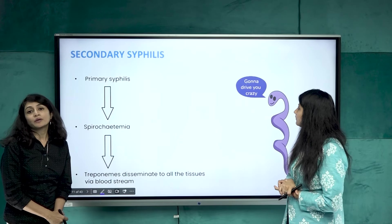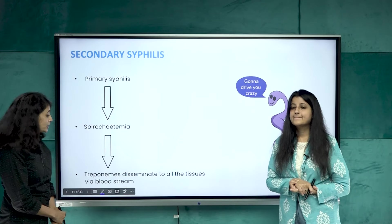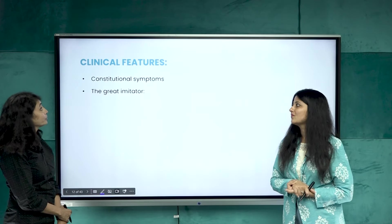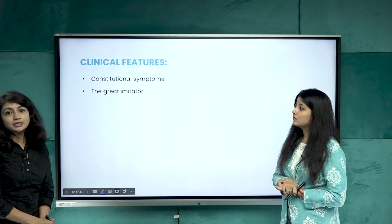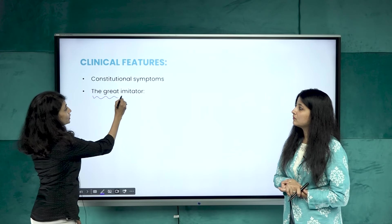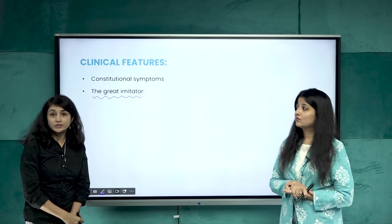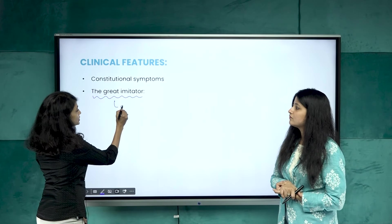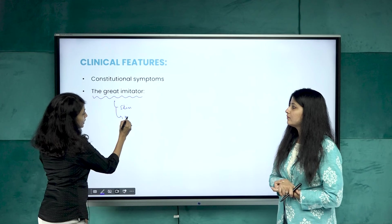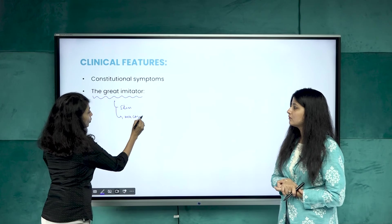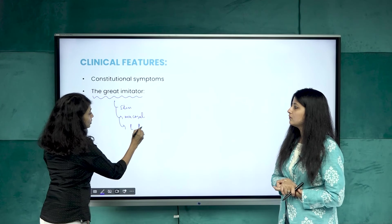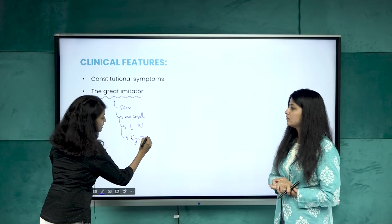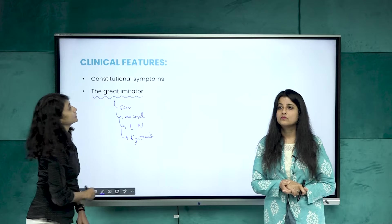If primary syphilis is not treated, Treponema pallidum enters the blood causing spirochetemia, which disseminates into various tissues through the bloodstream, leading to secondary syphilis. Secondary syphilis is called the great imitator. With Treponema pallidum in the bloodstream, you can get skin manifestations, mucosal involvement, lymph node involvement, or systemic features — a constellation that can mimic many systemic disorders.